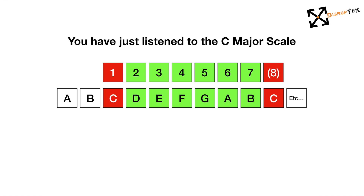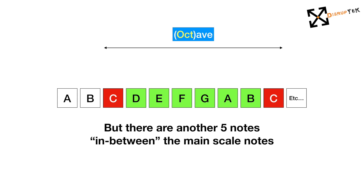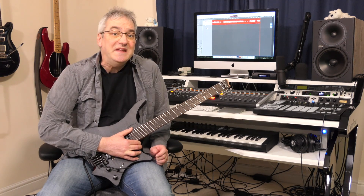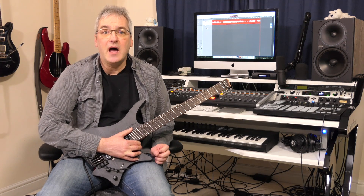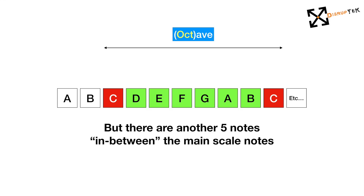But there are other silent notes that we don't use in this particular key. They sit between the familiar notes that you have just listened to. We need these extra notes to learn how to play in different keys and scales. Between C and D, we have a C-sharp, but it can also be known as a D-flat. It is exactly the same note. We just label it differently, depending on the scale that we are playing in.